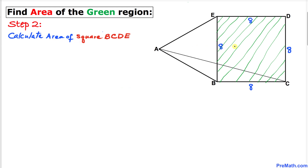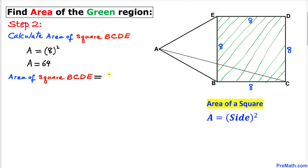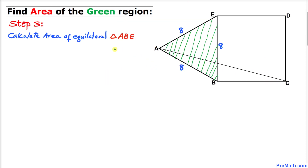Let's calculate the area of square BCDE. The formula for the area of a square is side length squared. Our side length is 8, so the area is 8 squared, which equals 64 square units.